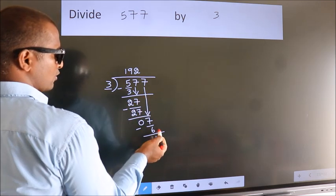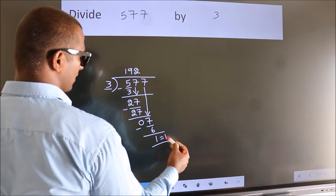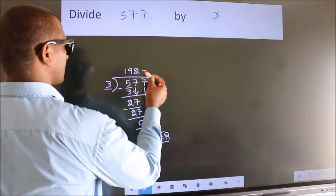No more numbers to bring it down. So, we stop here. This is our remainder. This is our quotient.